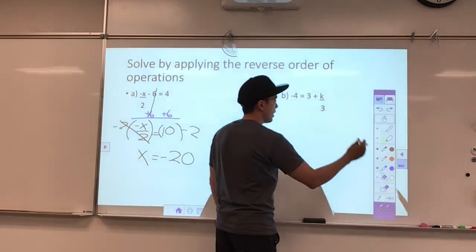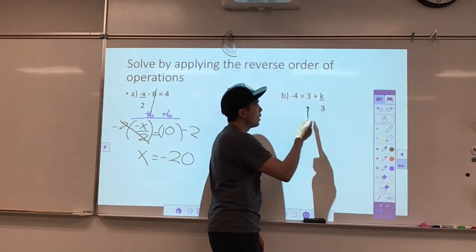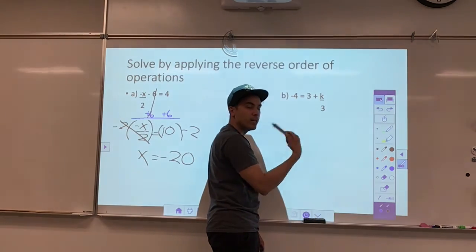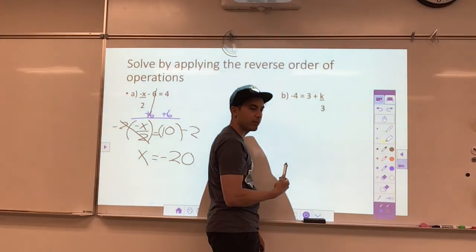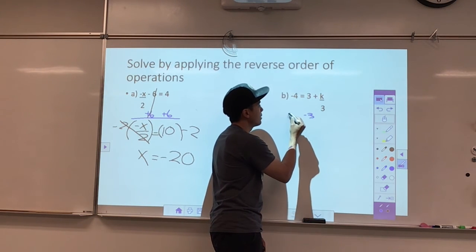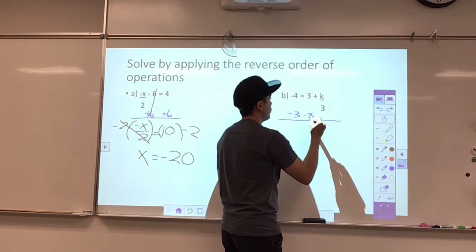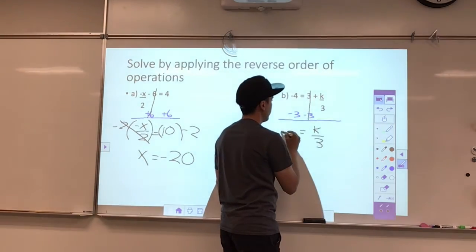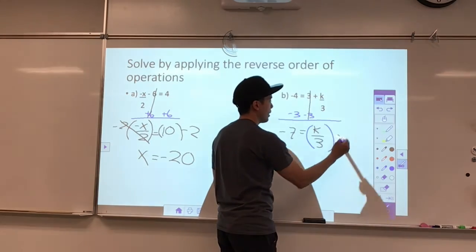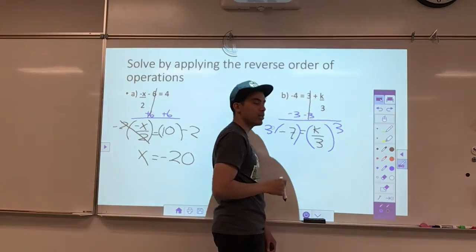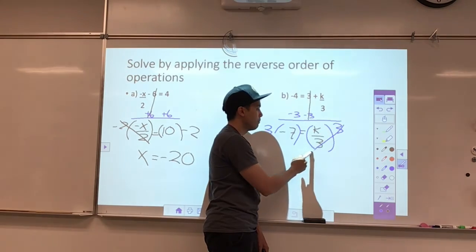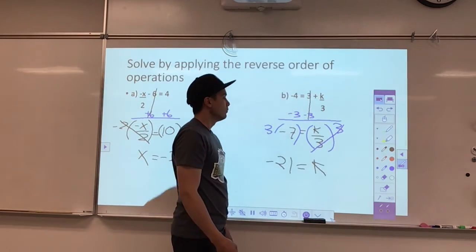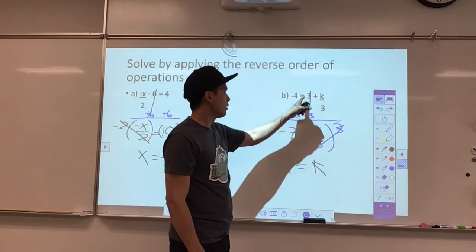This one is a little bit tricky because the variable is on the other side, but we use the same ideas. I want to get rid of the plus 3 — the constant term on the same side as my variable — first. So I'm going to subtract 3 from both sides. After doing that, I have k over 3 equals negative 4 take away 3, which is negative 7. Then I multiply both sides by 3, since k is being divided by 3, and I get negative 21 equals k.